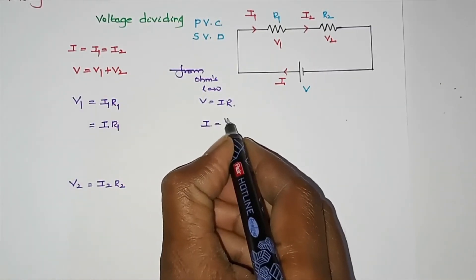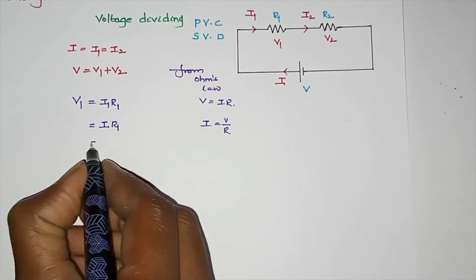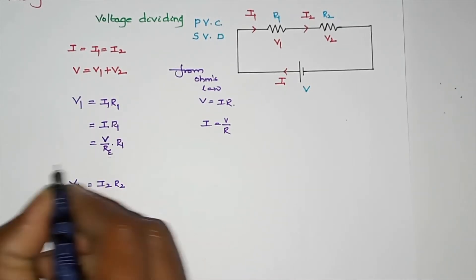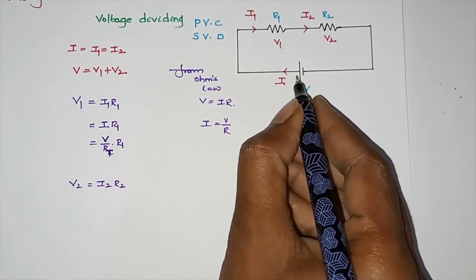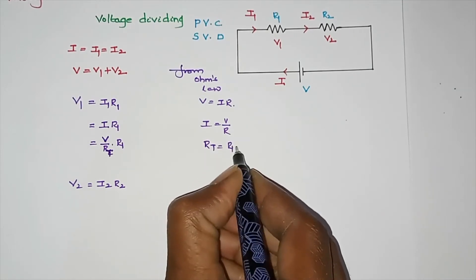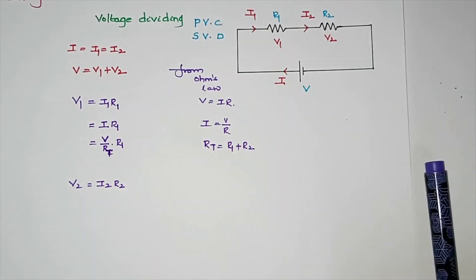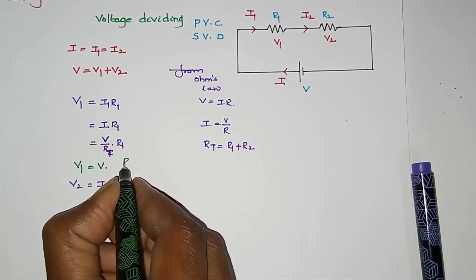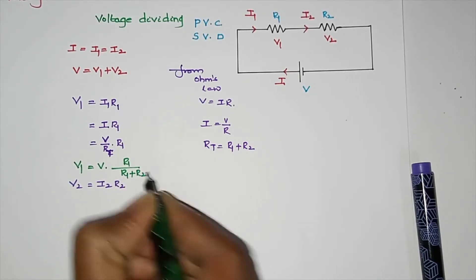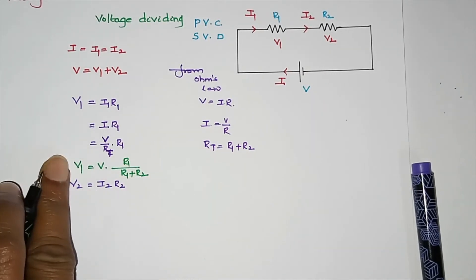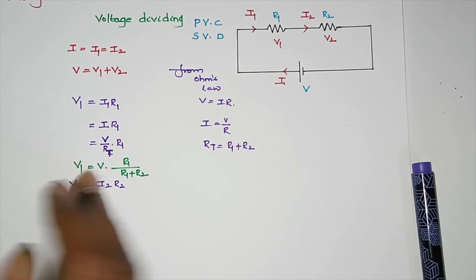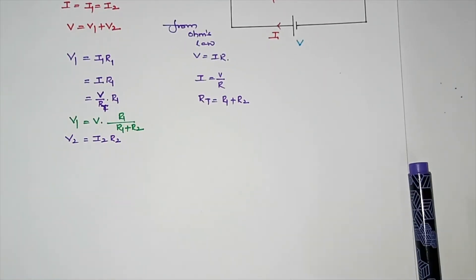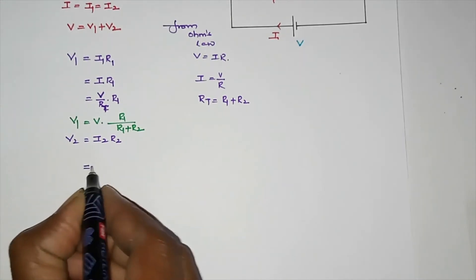From Ohm's law, I equals V divided by R. The total resistance R_total equals R1 plus R2. Therefore, V1 is equal to R1 divided by R1 plus R2, multiplied by the total voltage. This is the V1 value.